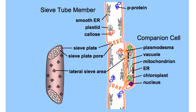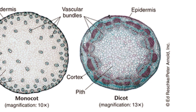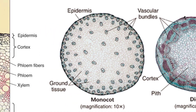Xylem and phloem occur together in vascular bundles, interior to the cortex. The arrangement of the bundles differs between monocots and other angiosperms. Each bundle includes xylem and phloem running parallel to each other, with the phloem closer to the epidermis. In eudicots, vascular bundles are arranged in a ring surrounding the pith — a central region of parenchyma similar to the cortex. In monocots, they are distributed as a complex network throughout the inner part of the stem.